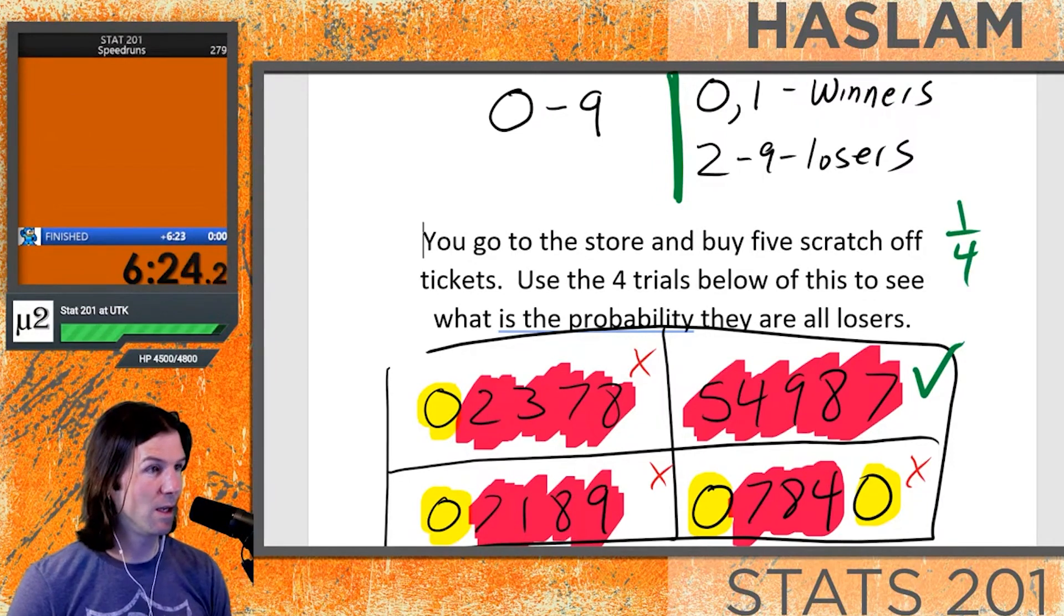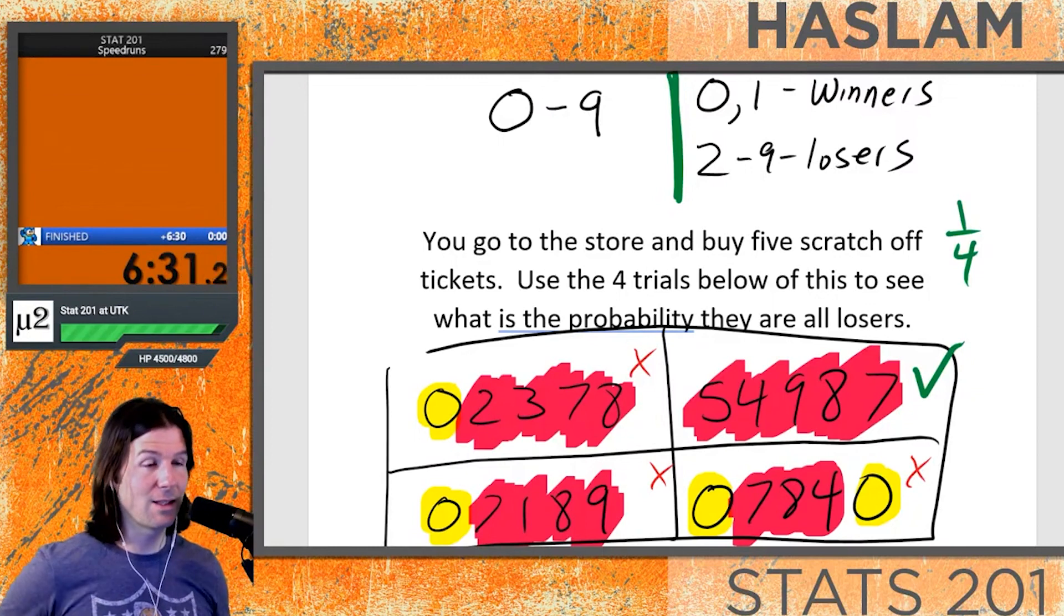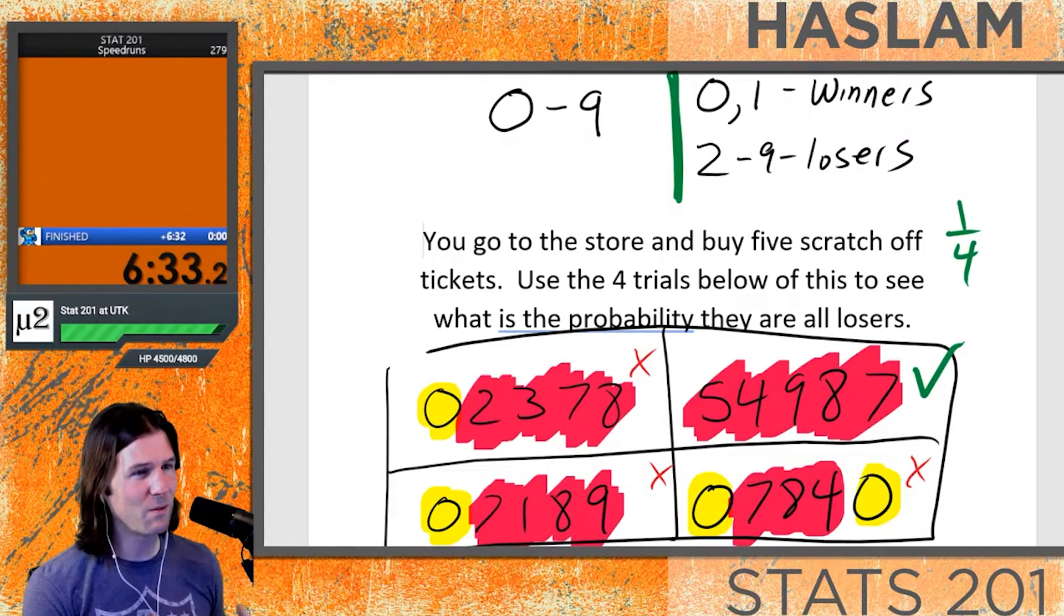Only 25% of the time, at least via this simulation, which is an estimate of what would occur, would we see all losers. This is not proof, it's just a very small simulation to estimate the probability of all losers.